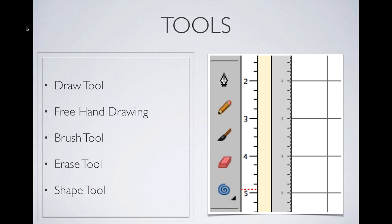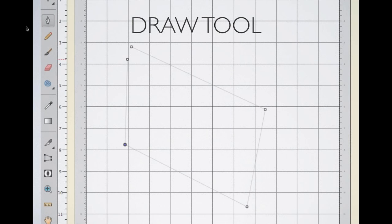We're only going to talk about these specific tools: the draw tool, freehand drawing, the brush tool, the erase tool, and the shape tool at the bottom. Starting with the draw tool — that's the pen tool where you can click and make shapes.